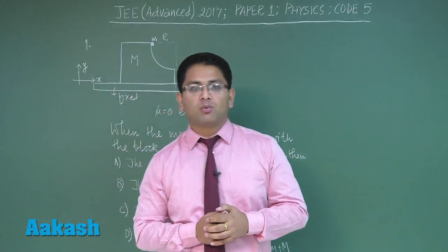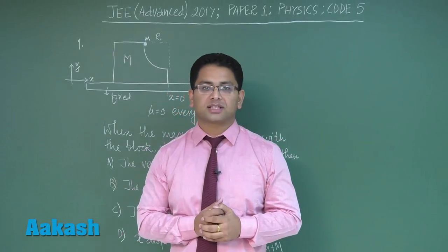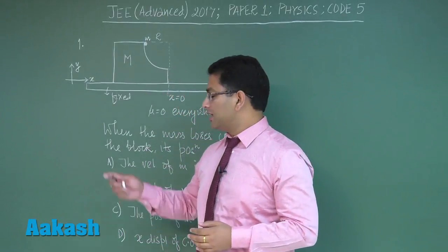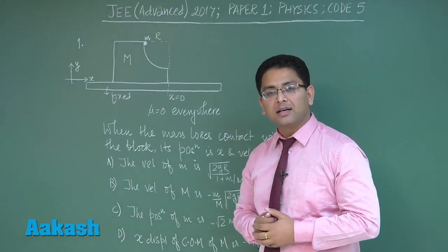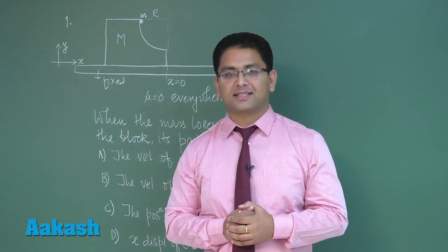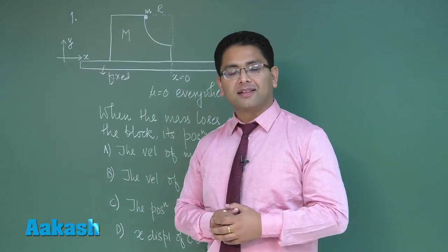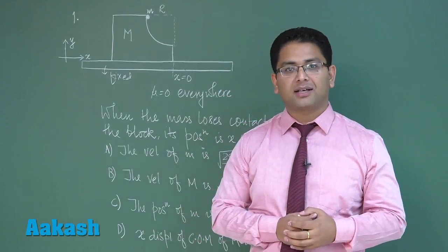The paper 1 code 5, the first section has seven questions and the questions may have one or more than one options correct and the marking of these questions is also quite interesting. If all the correct options are marked then you would be awarded four marks.